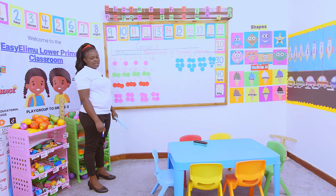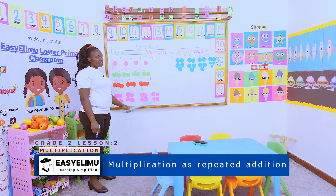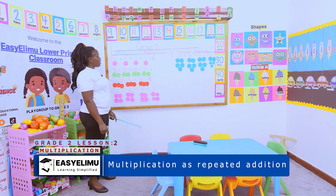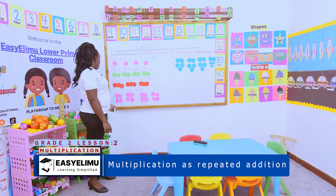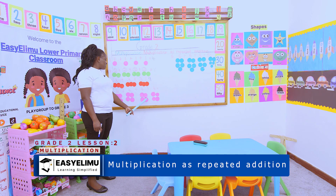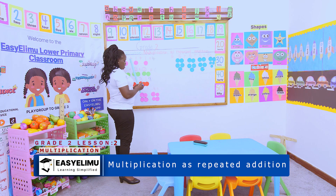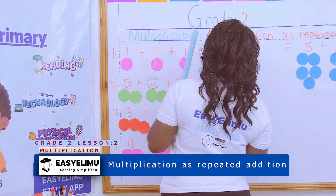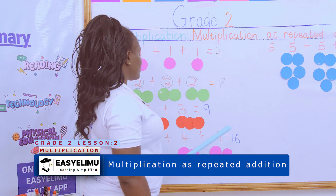How many times does four appear? One, two, three, four. That is the number of times number four appears. But now, what is the sum? The sum is the total number. So we count one through sixteen. The sum is sixteen. The sum of four plus four plus four plus four is sixteen.